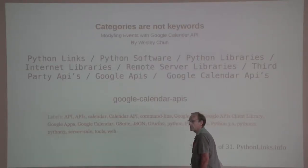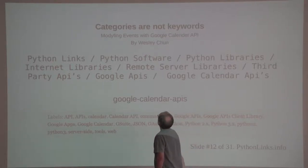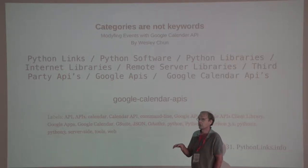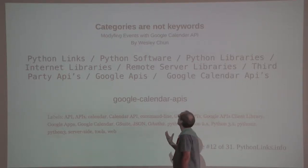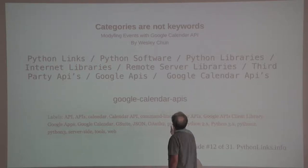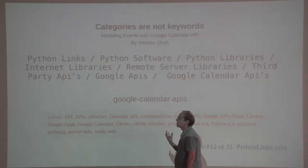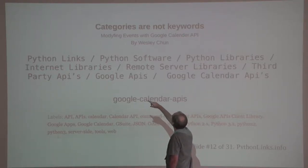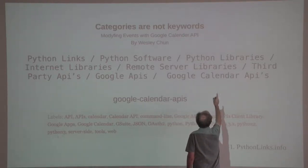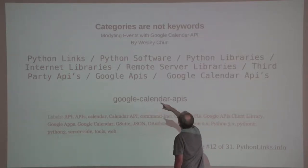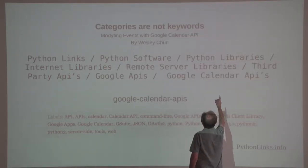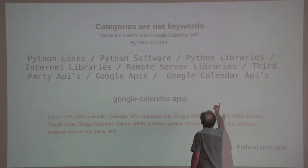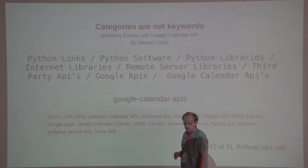Taxonomy is very different from keywords. Here we have an article — Wesley Chun is a famous author and he now works for Google as an evangelist. He wrote an article on modifying events with the Google Calendar API. Where does that show up in a taxonomy? Well, if you look at the tree, it shows up under Python Links, Python Software, Python Libraries, Python Internet Libraries, Remote Server Libraries, Third Party APIs, Google APIs, Google Calendar APIs — so it goes about ten levels deep in the tree.